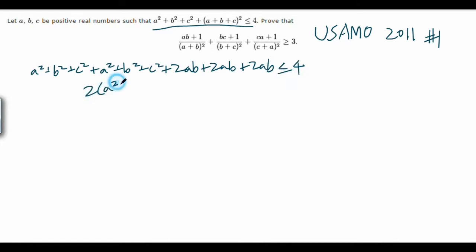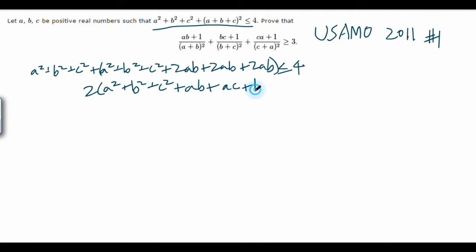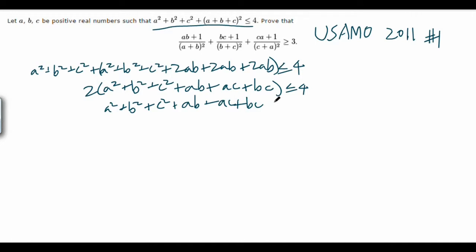So you expand into that, and this thing is this thing. That makes 2 plus B squared plus C squared plus AB plus AC plus BC. So: A squared plus B squared plus C squared plus AB plus AC plus BC. We are left with this condition. I don't see any 2's in here that we can substitute. We want to prove that this is greater than 3.